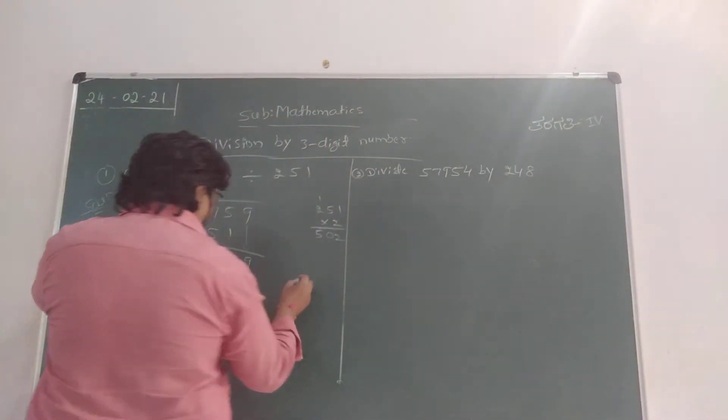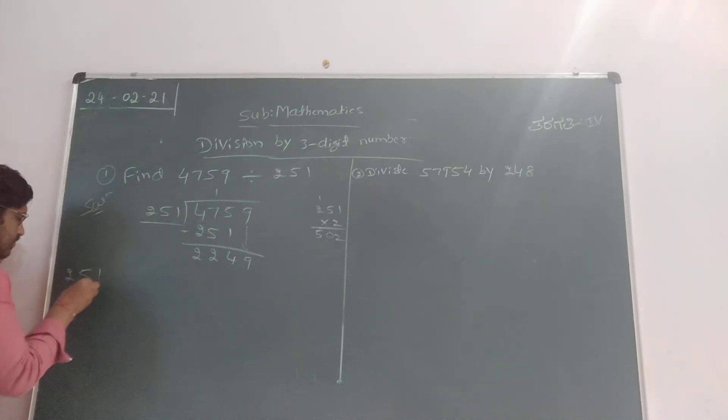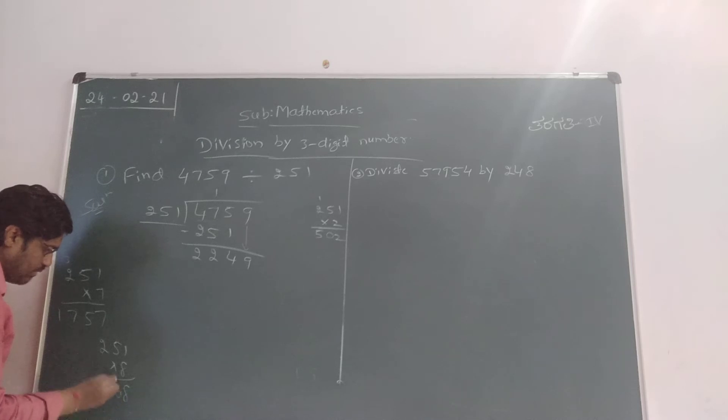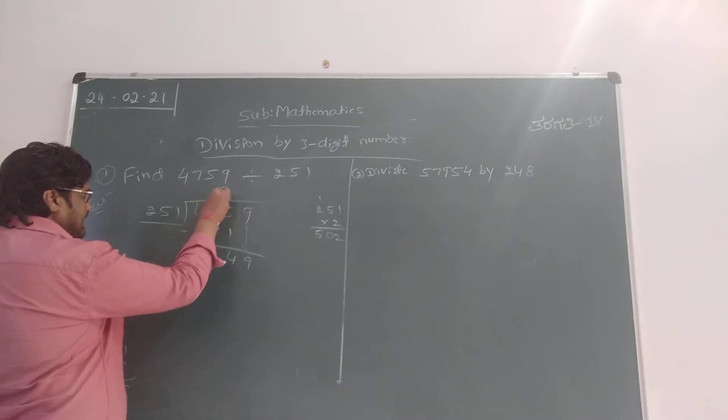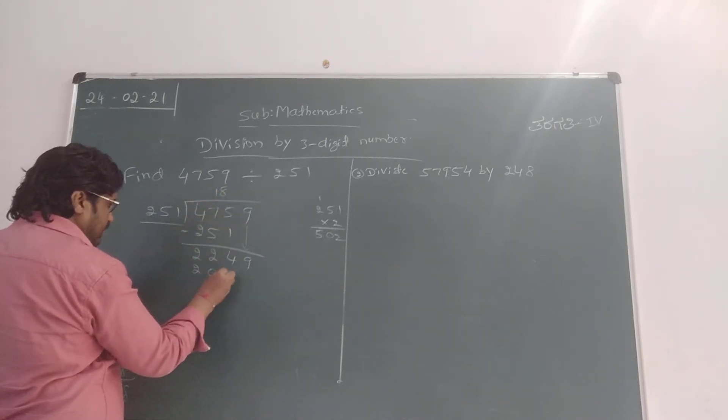Now 251, you can go 251 into 7 table. 7 times 7 is 35, 5 here carry 3, 7 fours are 28, 14 plus 3 is 17. It is near this number. Again, you can take 251 times 8: 8 ones are 8, 8 fives are 40, zero here carry 4, 8 twos are 16, 16 plus 4 is 20. It becomes 2008.